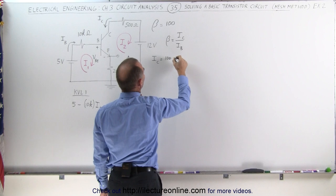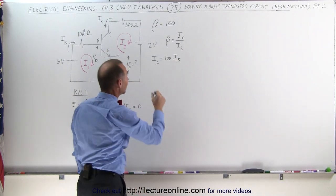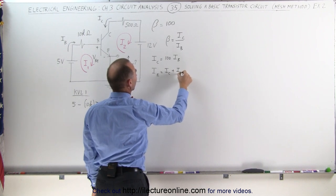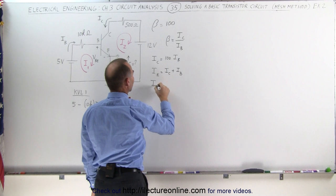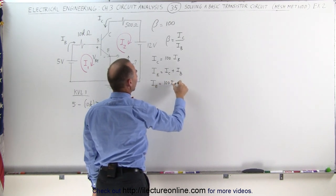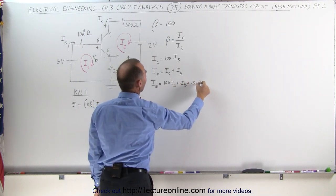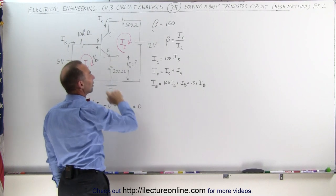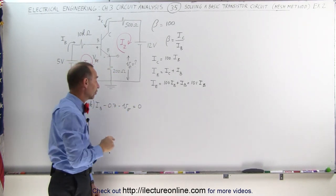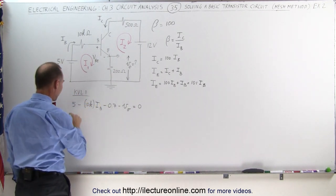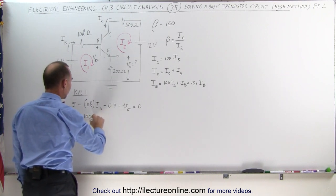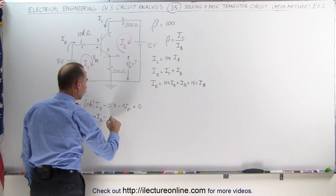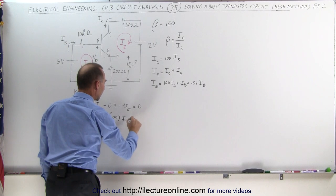The collector current is equal to 100 times the base current. We also know that the emitter current I sub E equals the collector current plus the base current. Since the collector current is 100 times the base current, the emitter current I sub E equals 101 times the base current. So now we can describe V sub O in terms of the resistor times the emitter current. The equation becomes: 4.3 minus 10,000 times I sub B minus 200 times I sub E equals 0.